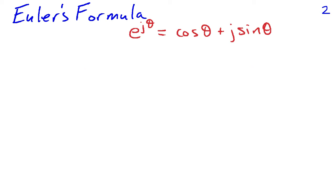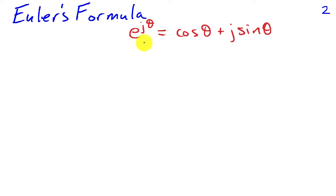Euler's formula states that e raised to the power of j theta, where j is the square root of minus 1, is equal to the cosine of theta plus j times the sine of theta. This looks like a somewhat surprising result, but it's extremely powerful. You can prove that this formula is true by substituting the power series representations for the exponential as well as that for the cosine and the sine.